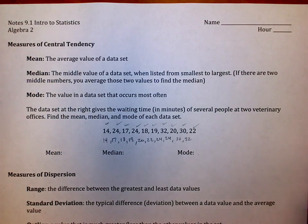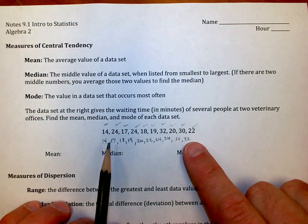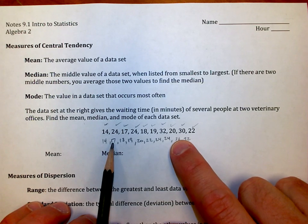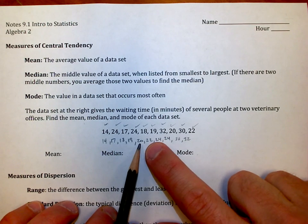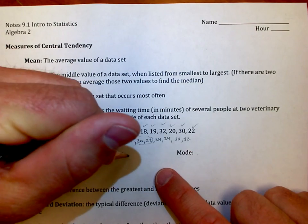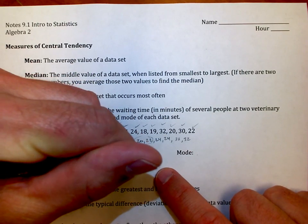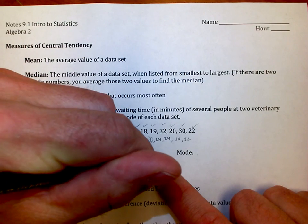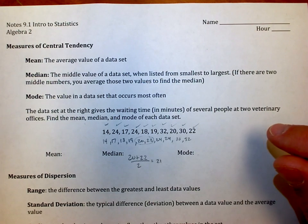If I wanted to do median now, I would look at these ten values. There's two middle values - 20 and 22 seem to be the middle values right here. So I take the 20 and the 22 and I add them up and divide by two. Those would average out to 21. So your median would be 21.